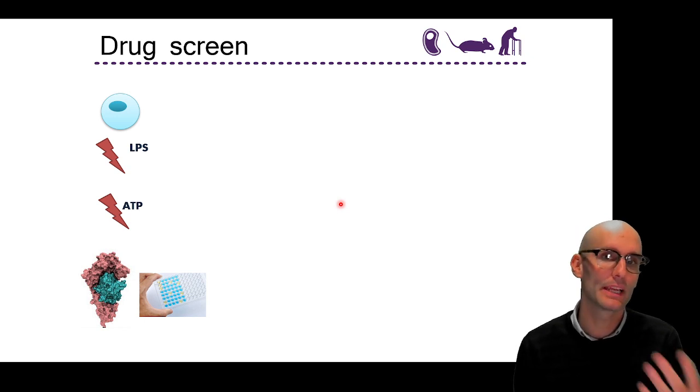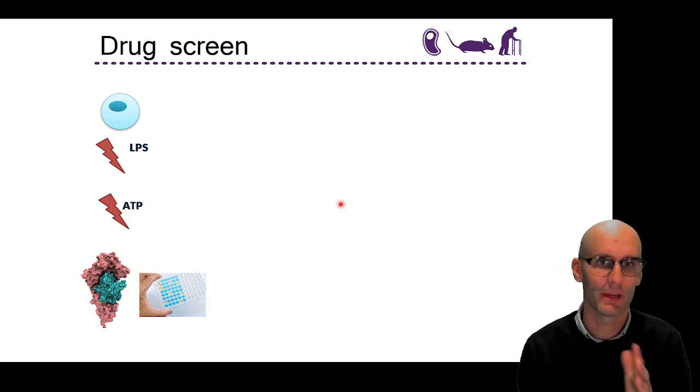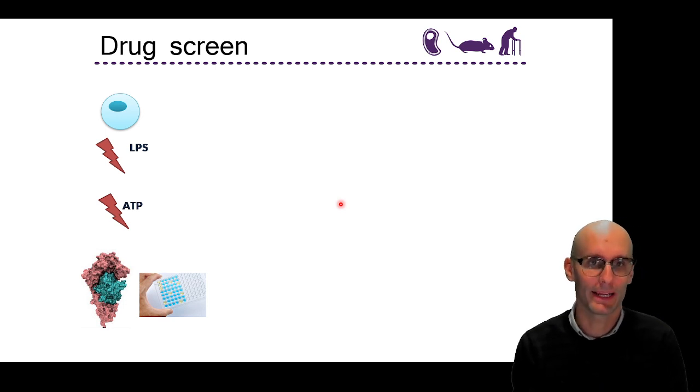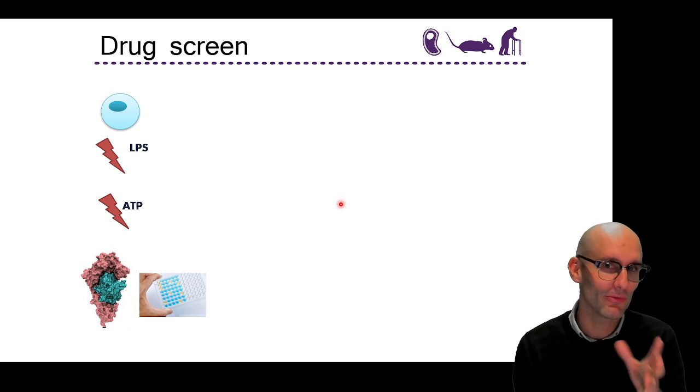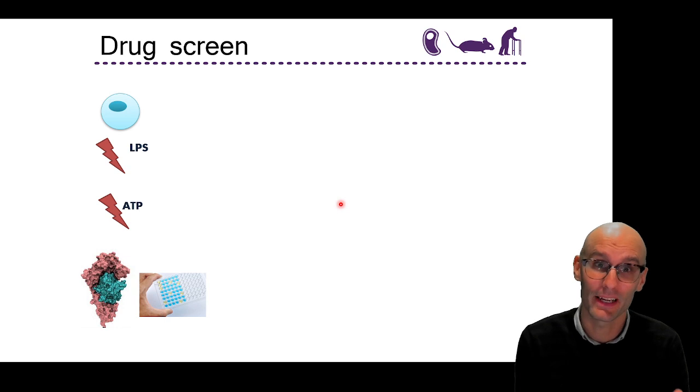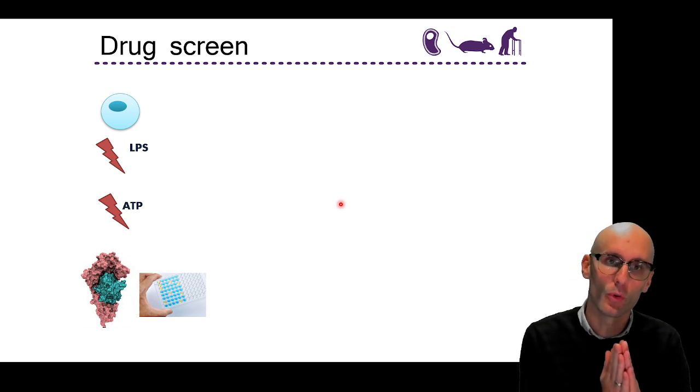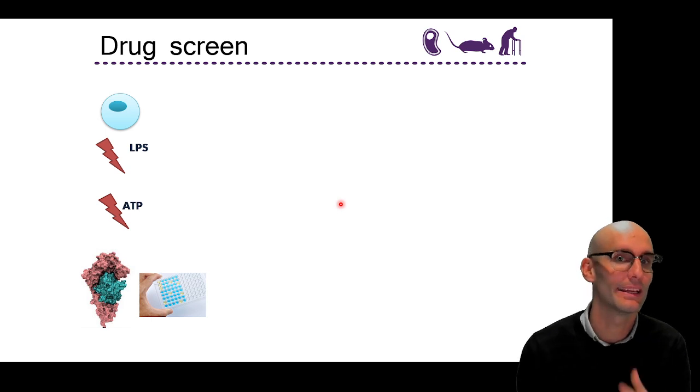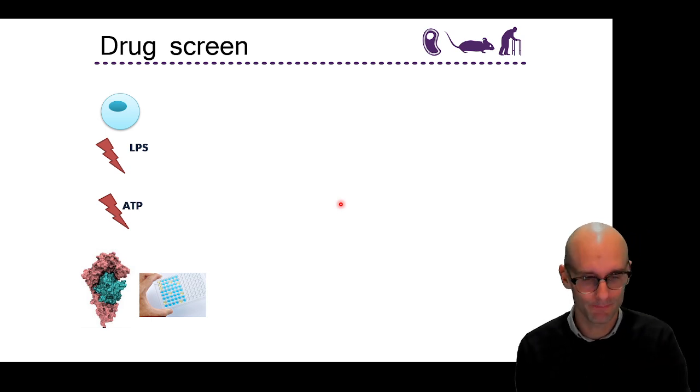And then, we would give it either an hour or four hours depending on the stimulant, sometimes two hours. We would measure the interleukin-1-beta coming off. And so, in this way, we could screen a lot of drugs. It's not really Alzheimer's specific, this model, but we're just looking for some generic NLRP3 activators and seeing if we can inhibit the NLRP3 inflammasome. So, then we could test a large number of drugs.